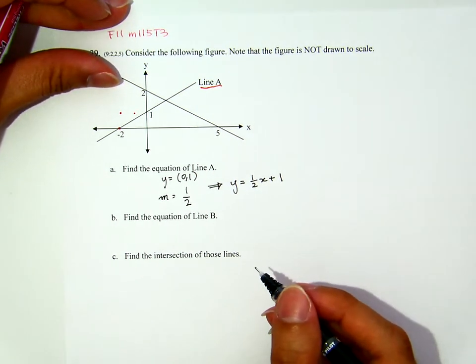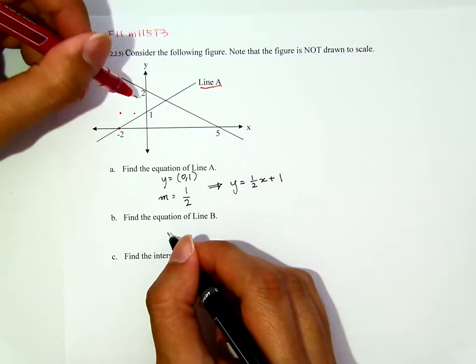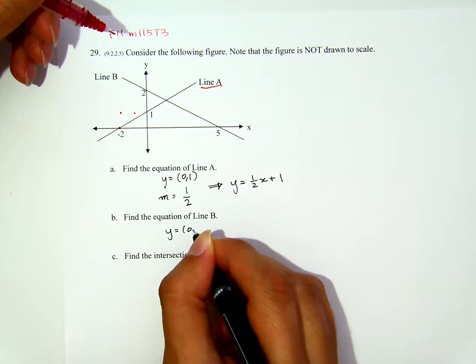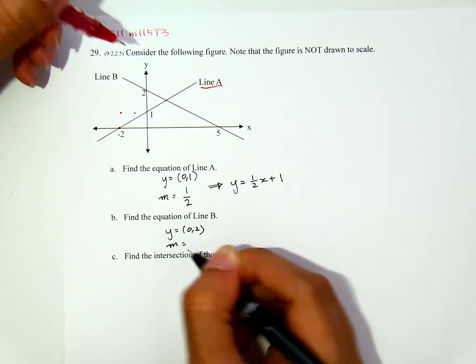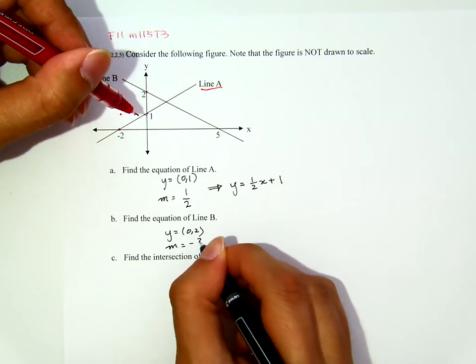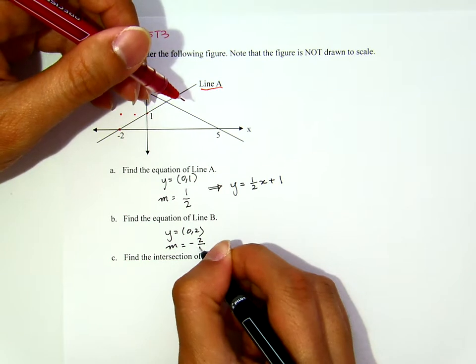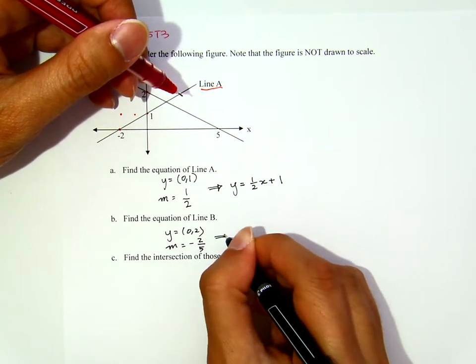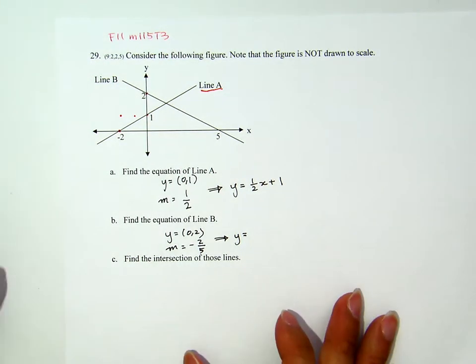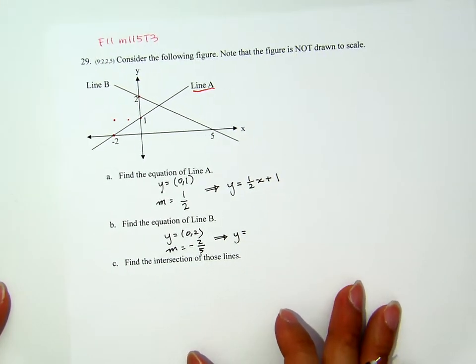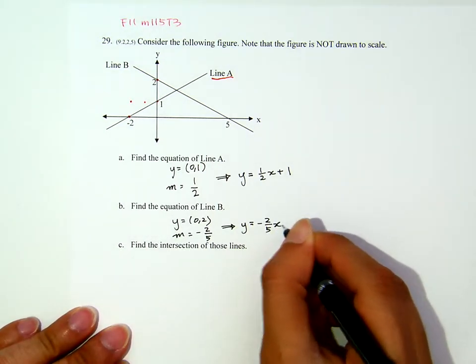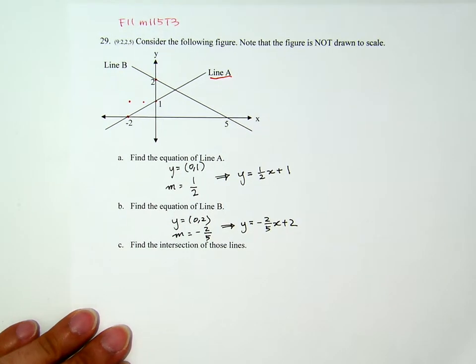Now, let's see the equation of line B. Line B has the y-intercept is 0, 2 and the slope is, from this point here, I go down two units, that's negative 2, and I run five to the right. That means the equation of line B is given by y equals negative two-fifths x plus two. That's the slope-intercept form.